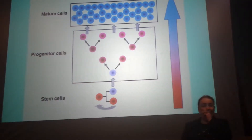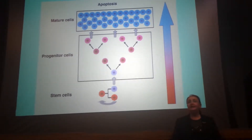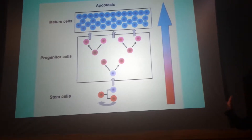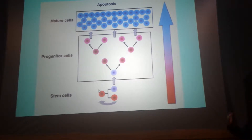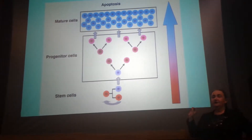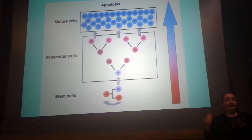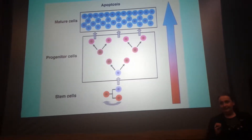All our cells of the body, including hematologic cells or blood cells, originate from a stem cell. A stem cell develops gradually into progenitors, and then from progenitors into different lineages of cells. It could be a red blood cell, a lymphocyte, a liver cell, whatever. All the cells develop initially from a stem cell.